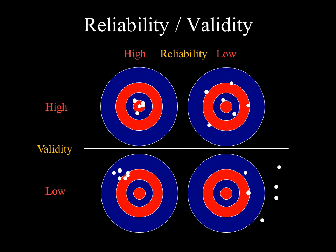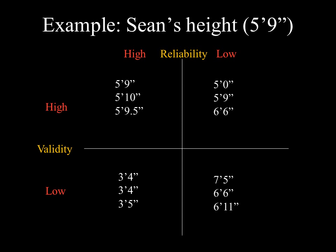For example, if you measure my height — I'm about five-nine — with high reliability and high validity you'd get pretty much the same response each time: five-nine, five-ten, five-nine-and-a-half, depending on whether I'm wearing shoes. With low reliability and high validity, you'd measure something like five-foot-zero, five-foot-nine, six-foot-six — the average of those is about my true height, but the measurements vary really widely.